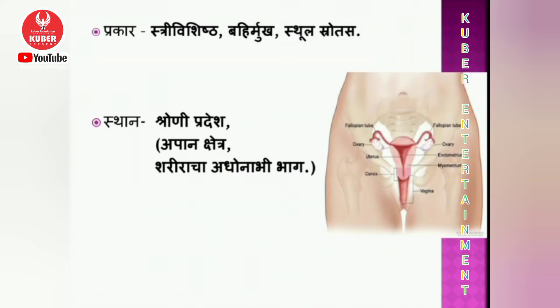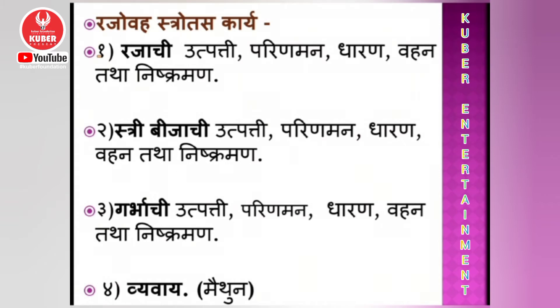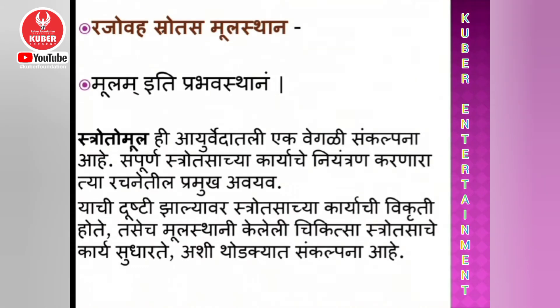Location is in the sharoni, i.e., in the pelvic cavity. The part below the umbilicus is called apanakshetra. Functions of Rajovah Strotas: first, production, conversion, holding, transport and excretion of the menstrual fluid, i.e., raja; second, production, conversion, holding, transport and excretion of the stribeja, i.e., ovum; third, production, conversion, holding, transport and excretion of the garbha, i.e., fetus; and last, coitus.